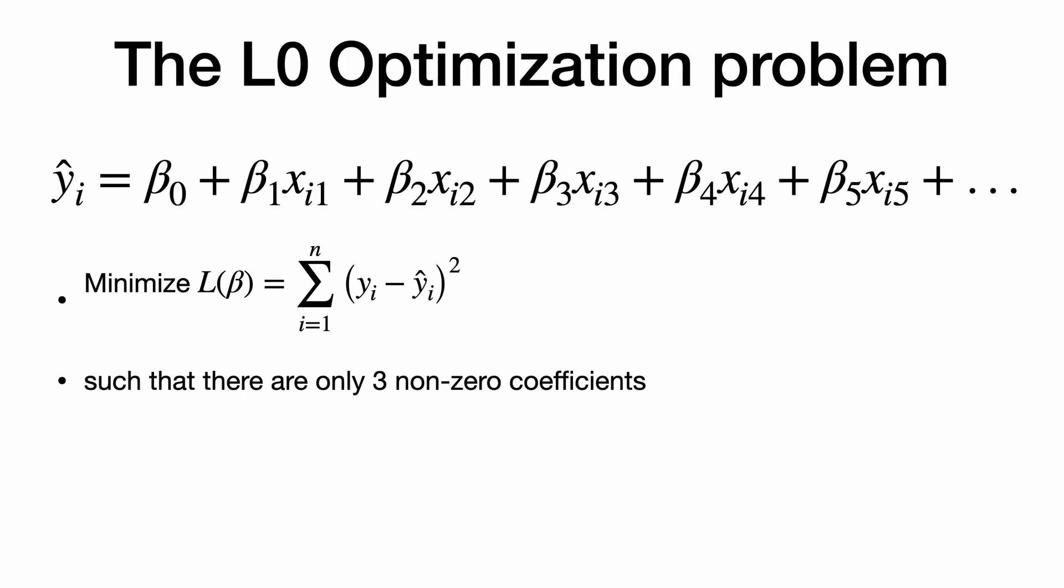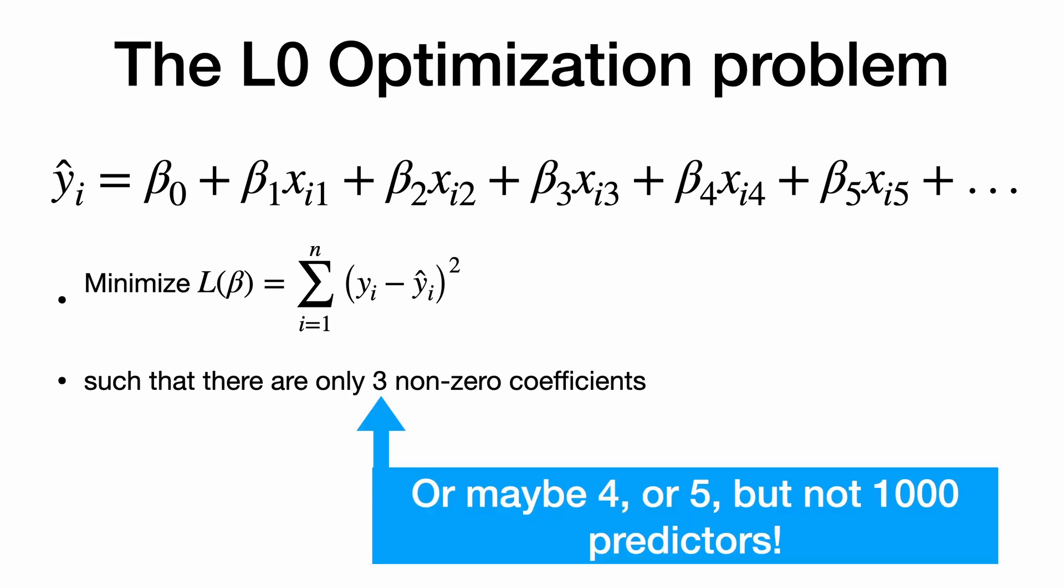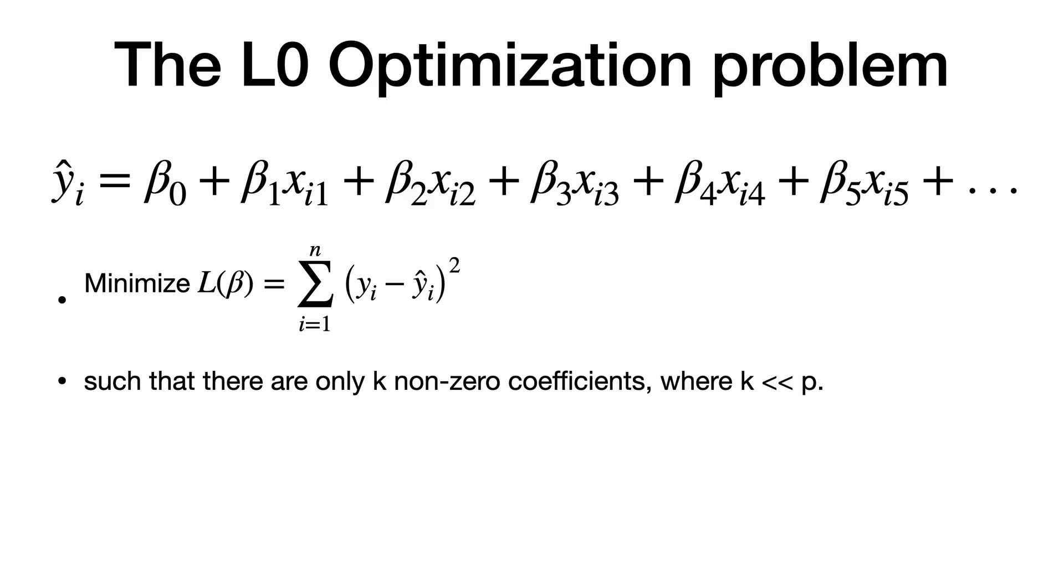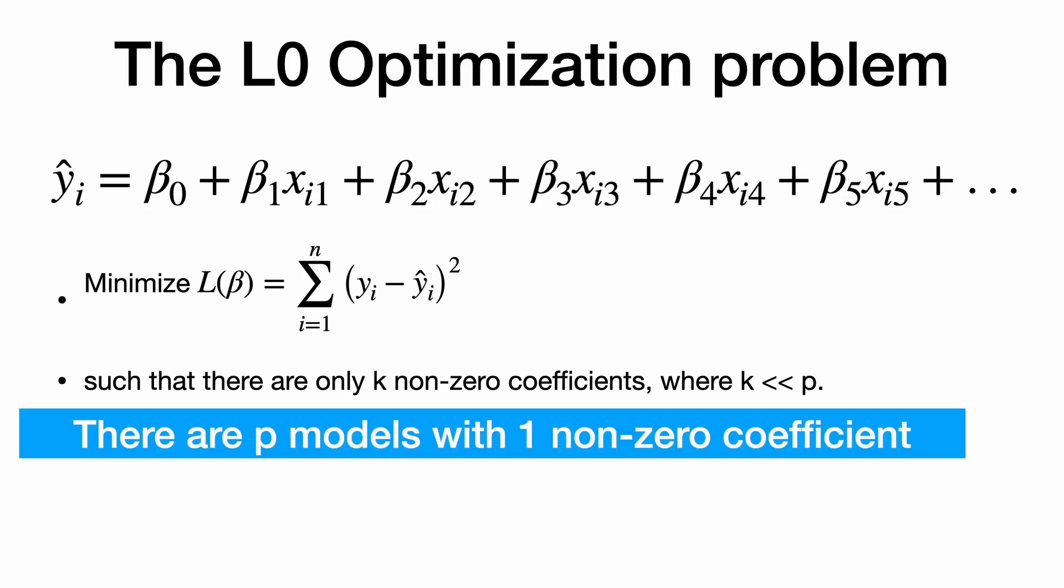Now, here's what we really want to do. We really want to solve what we call an L0 optimization problem, which minimizes the sum of squares, but only has perhaps three non-zero coefficients or maybe four or maybe five, but certainly not a thousand predictors. So we want only K non-zero coefficients where K is much less than P, the total number of predictors we have available to us in the data.